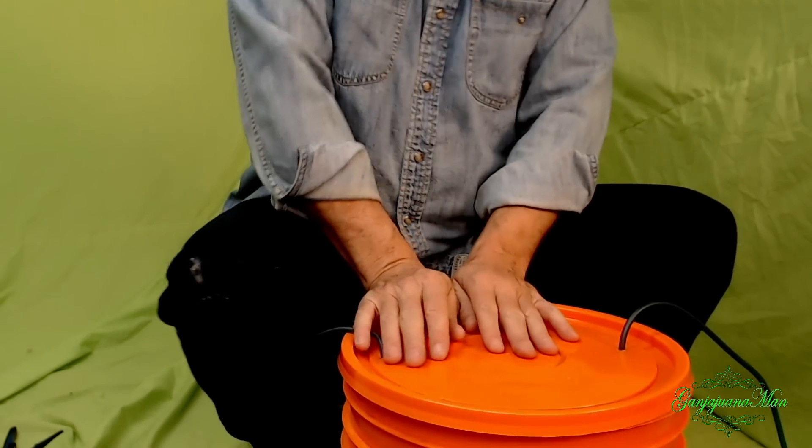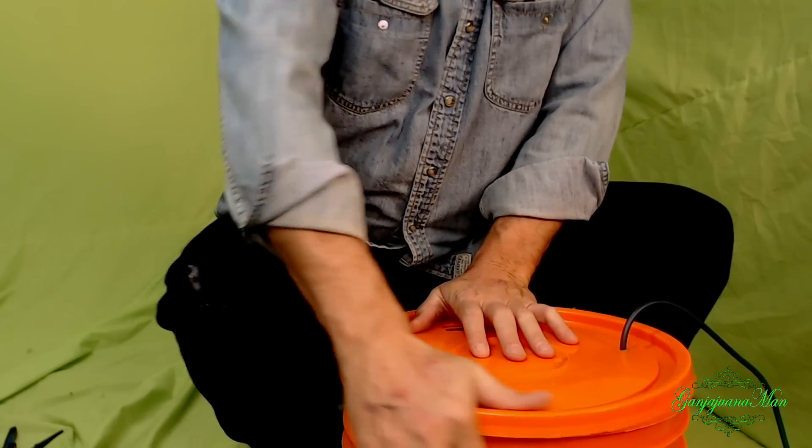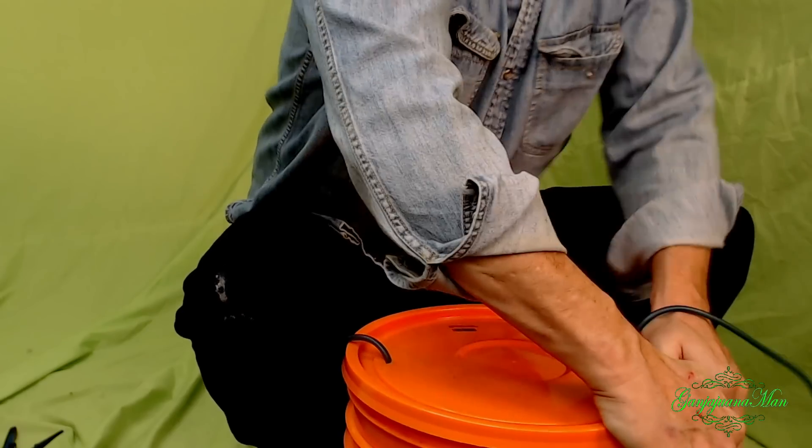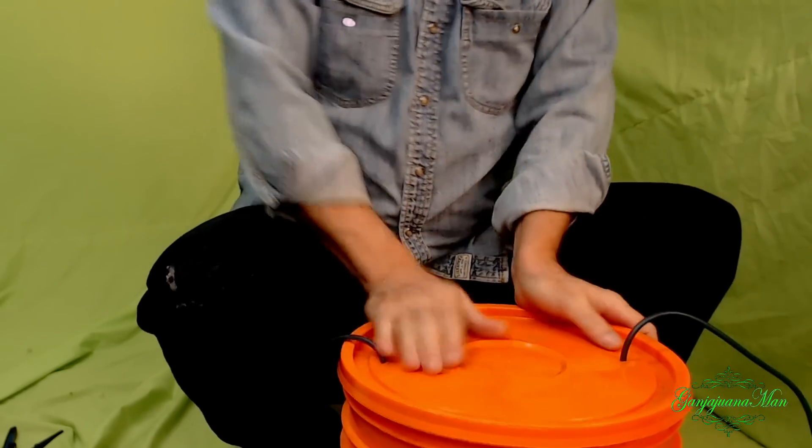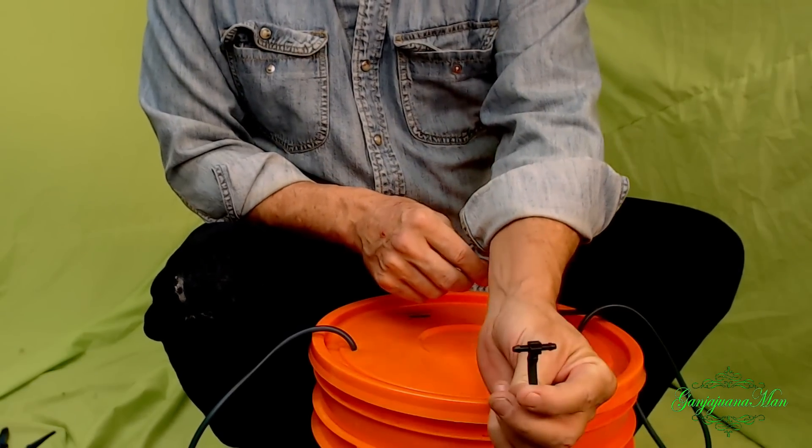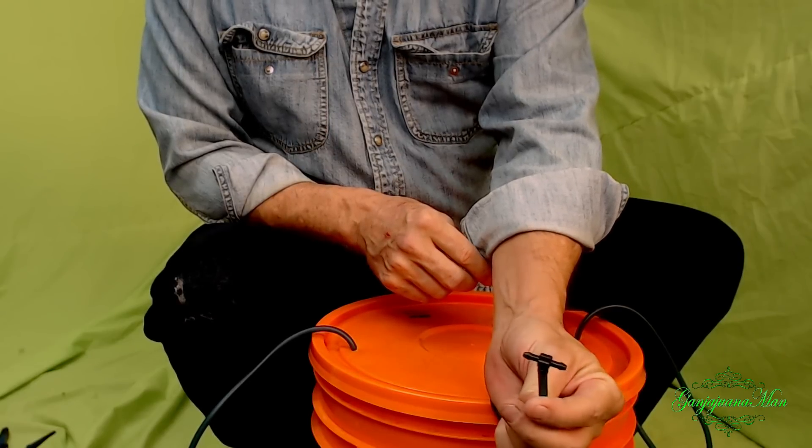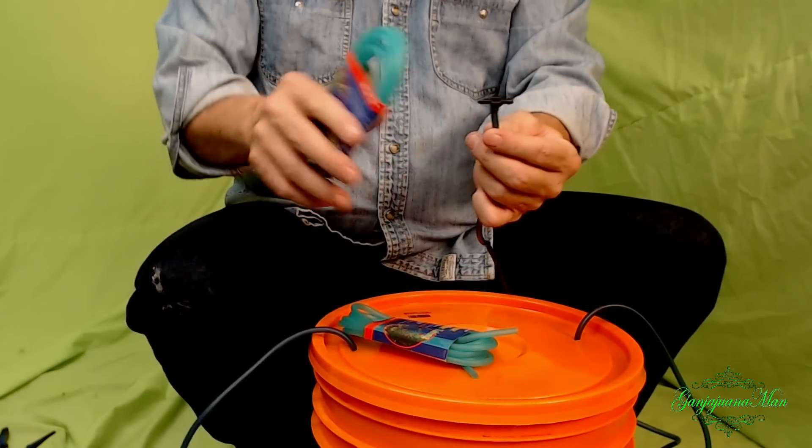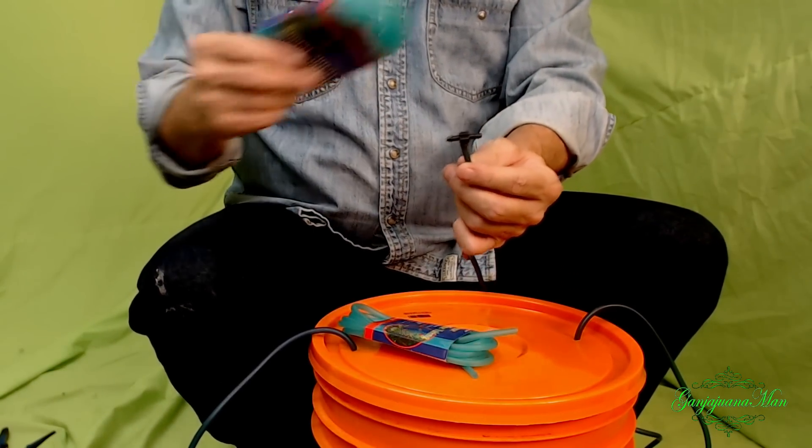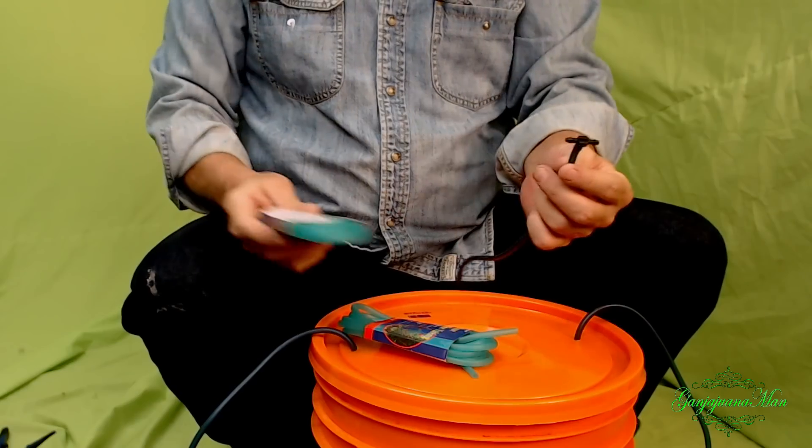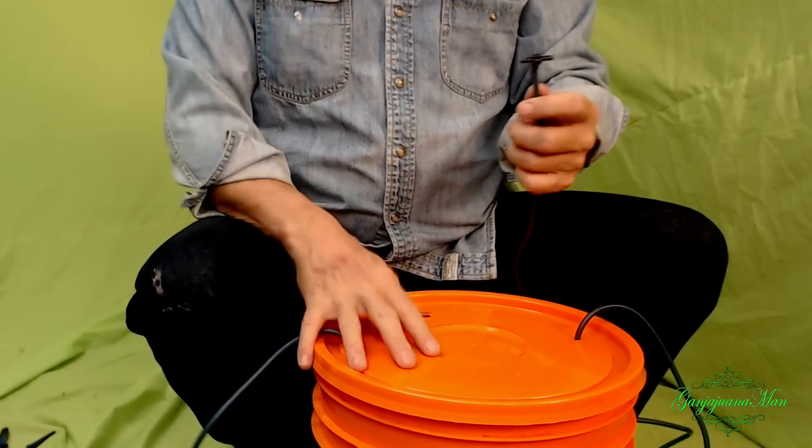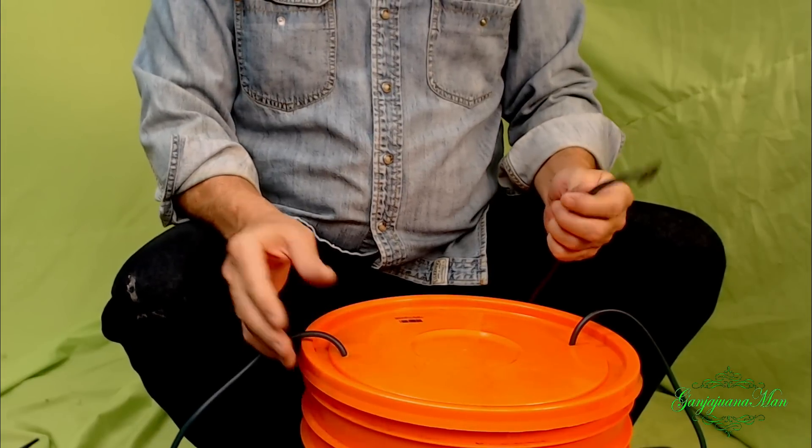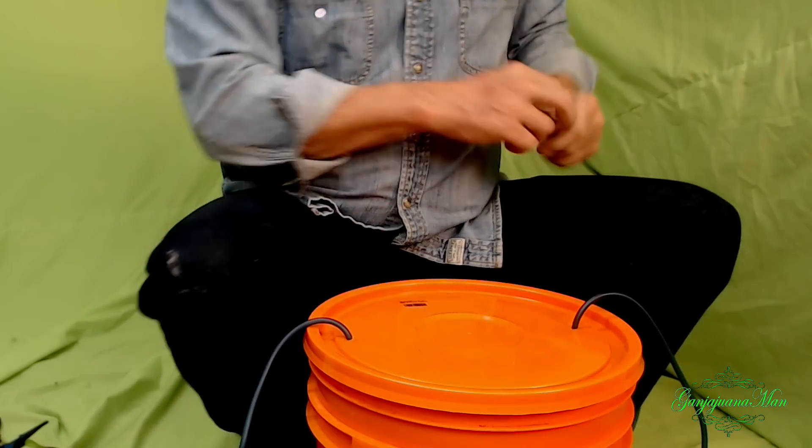Put a little tee on there, and then you can have one hose running to one tent, another hose running to another tent, because obviously this isn't for a large garden, this is just for a tent, or a small room.